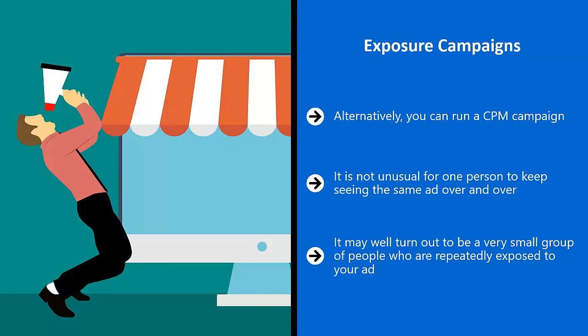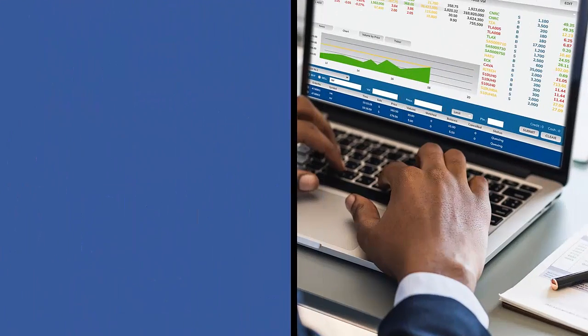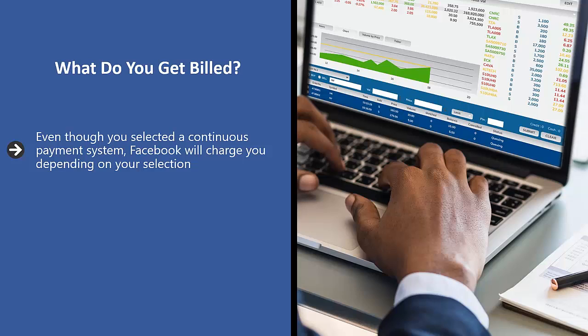You can always change Facebook's recommended price per 1,000 impressions — please understand that this is your bid, and if you're bidding too low, Facebook can stop displaying your ads because other advertisers are paying a higher price for the same spot. When do you get billed? Even though you selected a continuous payment system, Facebook will charge you depending on your selection. You can set up a threshold — once your billable charges reach a certain threshold, the charge will be reflected on your credit card or PayPal account.